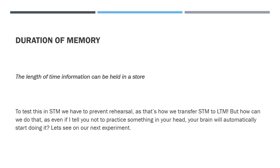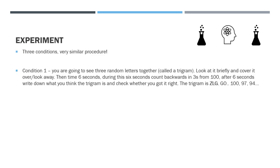First one: count backwards in threes from 100 for six seconds. The trigram you need to remember is Z, L, G. Start counting backwards now: 100, 97, 94... Stop - write it down, try not to look at the screen. It was Z, L, G - did you get it? Give yourself a mark if you did.